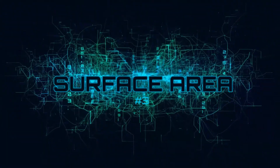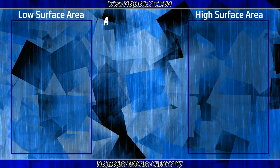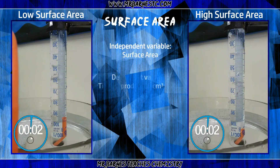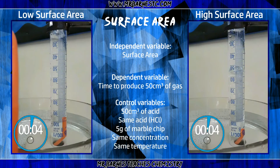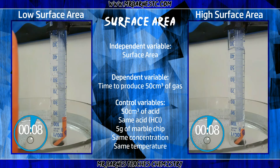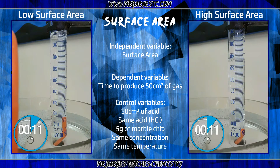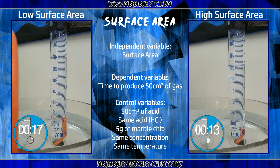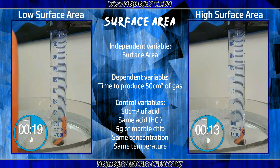The final one for this practical is surface area. To increase the surface area, you want to take the marble chips and crush them up into a powder. I've kept the mass, the concentration, the temperature and the volume of everything the same. The only thing that I've changed is the surface area - on the right I've crushed it up into a powder, and on the left I've used small marble chips which has a lower surface area. As you can see, the one with the larger surface area increases the rate of reaction.